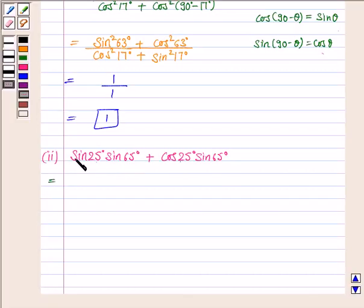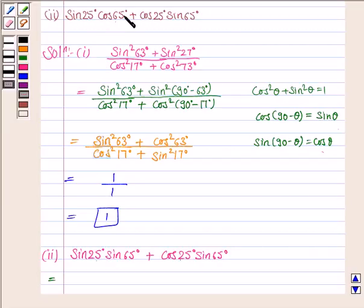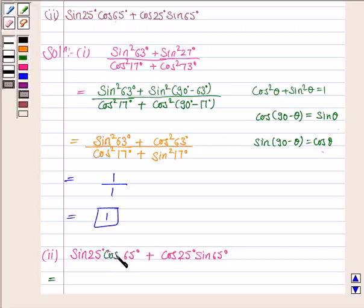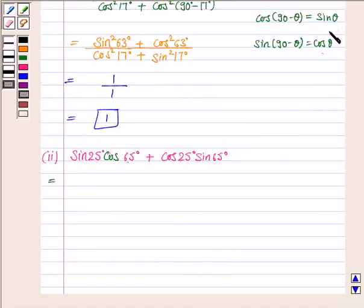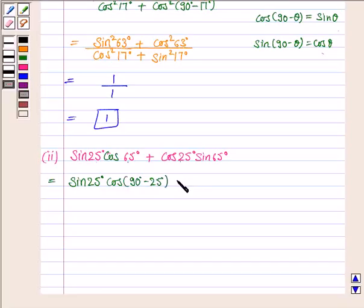So we will convert sin65° into cos25° and cos65° into sin25° using the same complementary angle rules. We have sin25°·cos65°, and cos65° can be written as cos(90° − 25°).